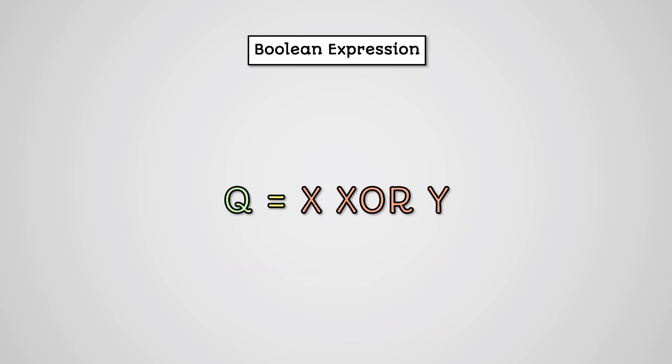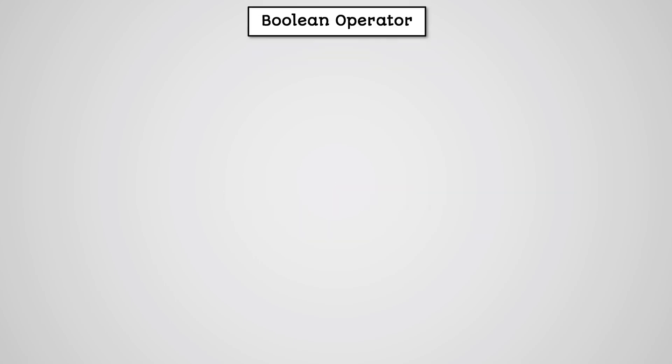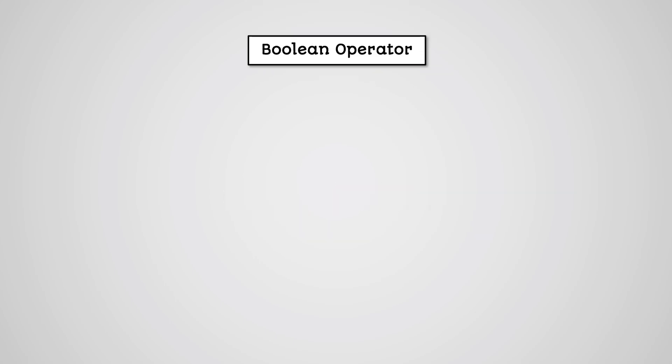If we wanted to write this as a Boolean expression, we can write it as Q equals X XOR Y. The Boolean expression operator for an exclusive OR gate is a circled plus symbol, so our Boolean expression written using a Boolean operator would be this.